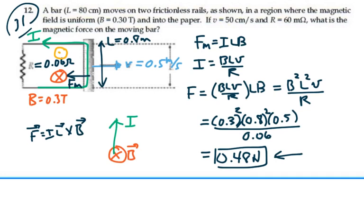as we do that cross product in the direction of the current cross with the magnetic field, then by the right hand rule, our force is going to the left. So this magnetic force is to the left, slowing the bar down, or working against the bar as it's moving to the right, 0.48 N.